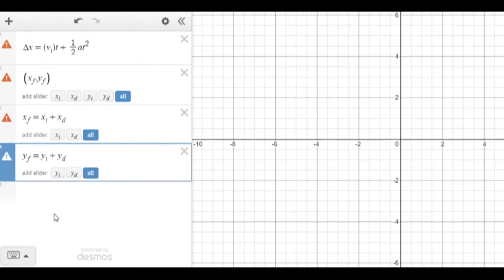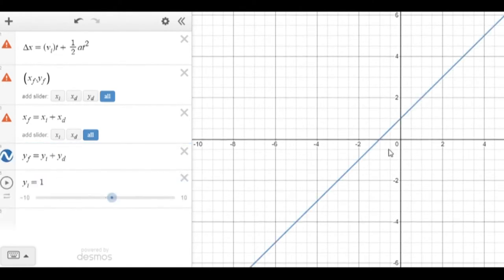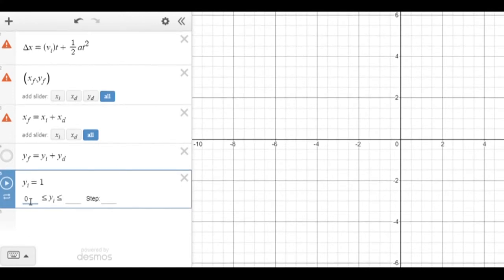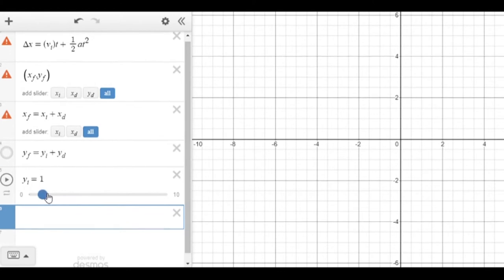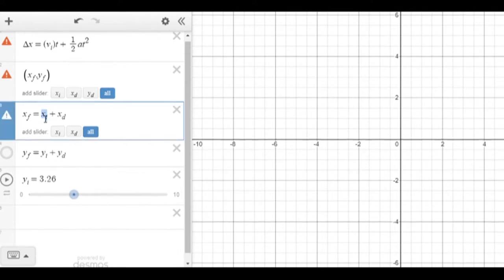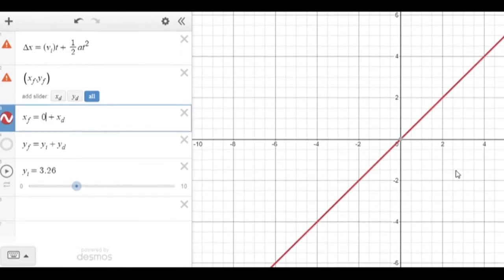And I'm going to add sliders for a couple of these, namely y-initial. I'm going to let that be a picked value. Notice that it's picked us up as a function, so I'm just going to hide that because that's not what we want to see. So I'm going to let the y-initial be some value between 0 and 10. So we can pick what the initial y-height of our particle is. But I'm just going to let the x-initial just always be 0, just for simplicity.